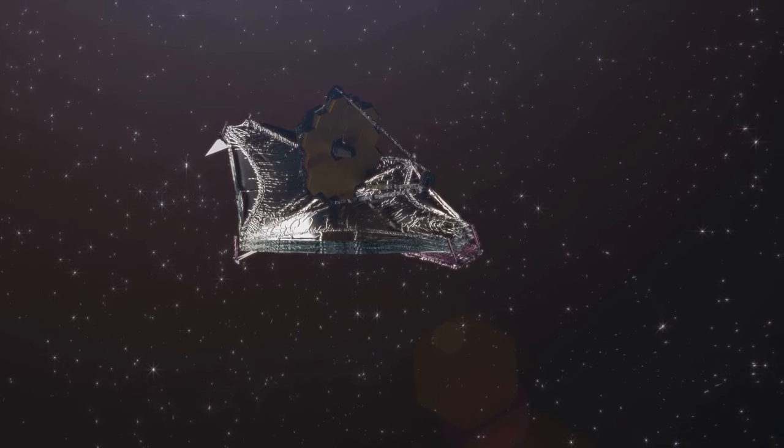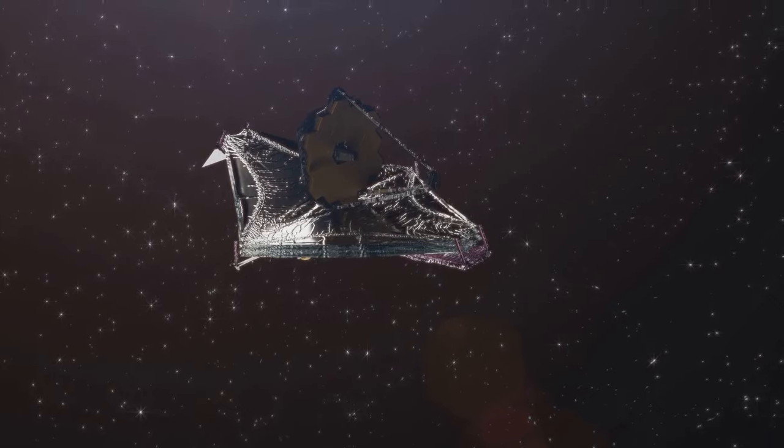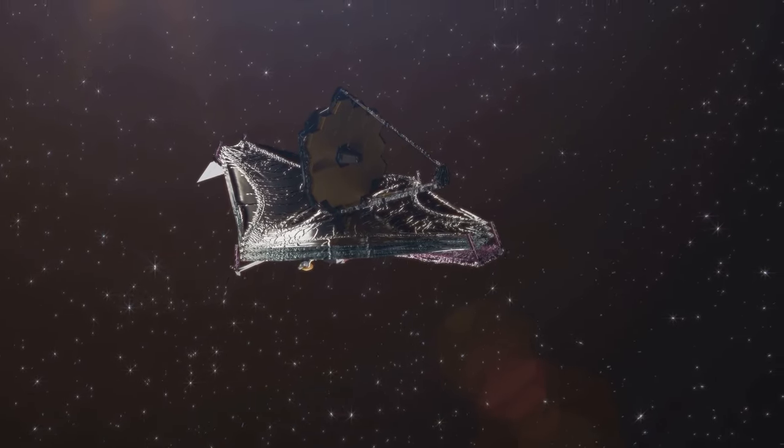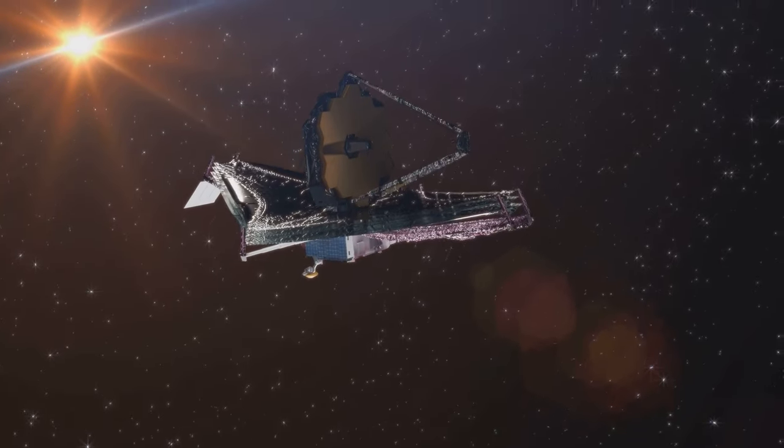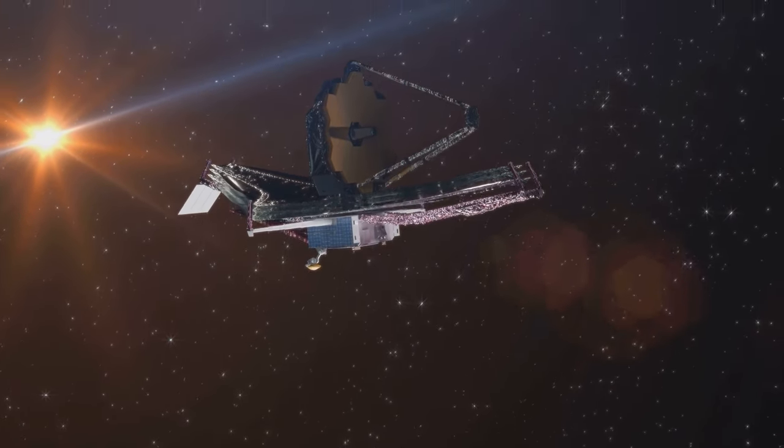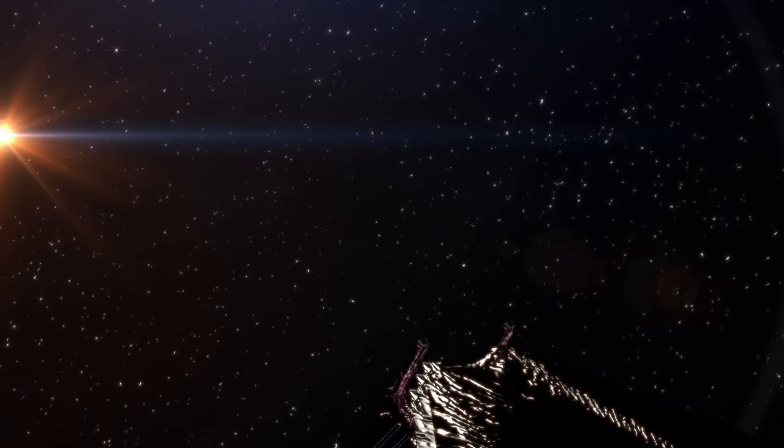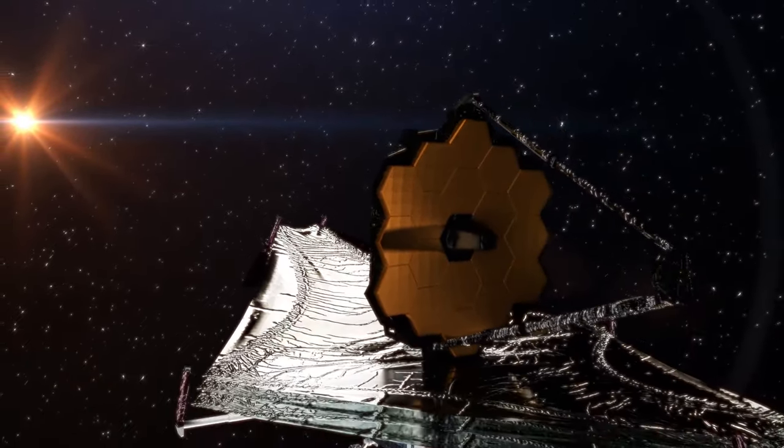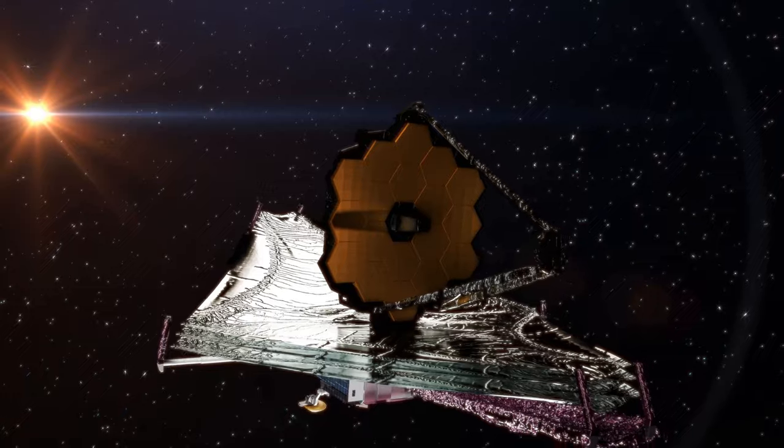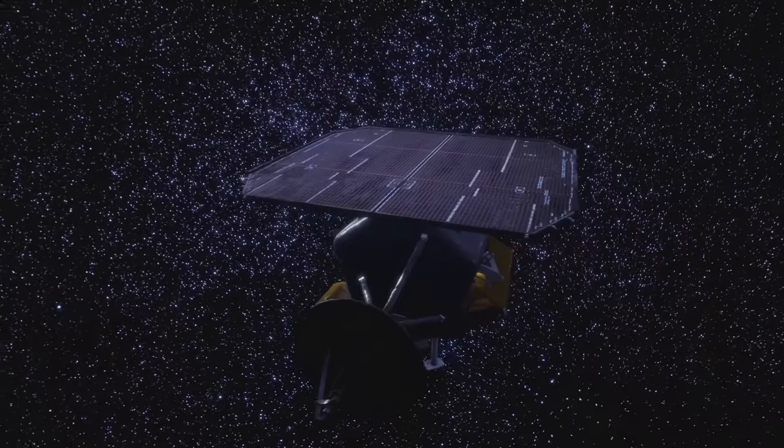Another technological marvel is the JWST's Sun Shield, an engineering masterpiece the size of a tennis court. This five-layer shield protects the telescope from the sun's heat, keeping its instruments at a chilly minus 370 degrees Fahrenheit. This is crucial, as it allows the telescope to detect the faint heat signatures of distant celestial bodies without interference from its own thermal emissions.